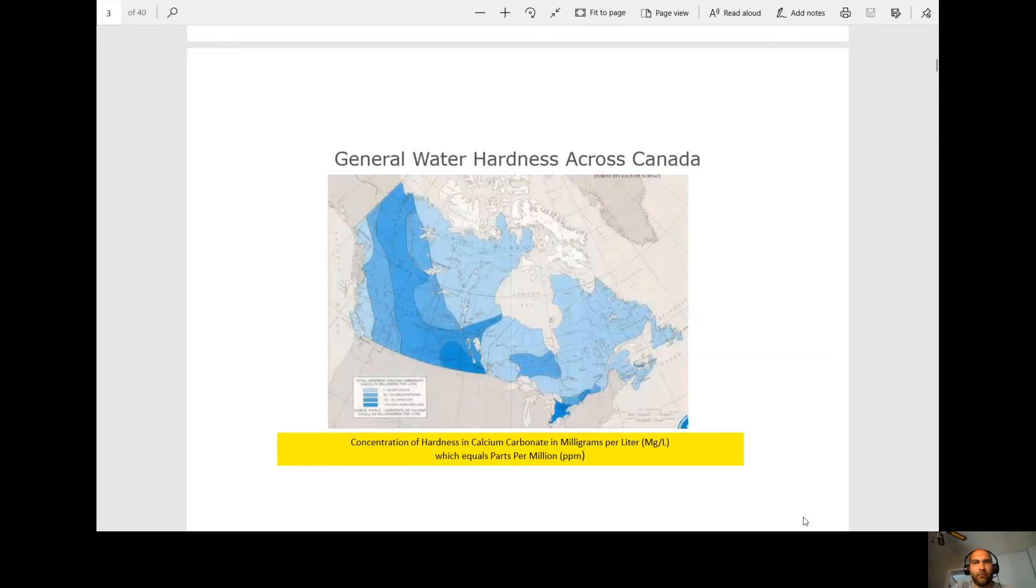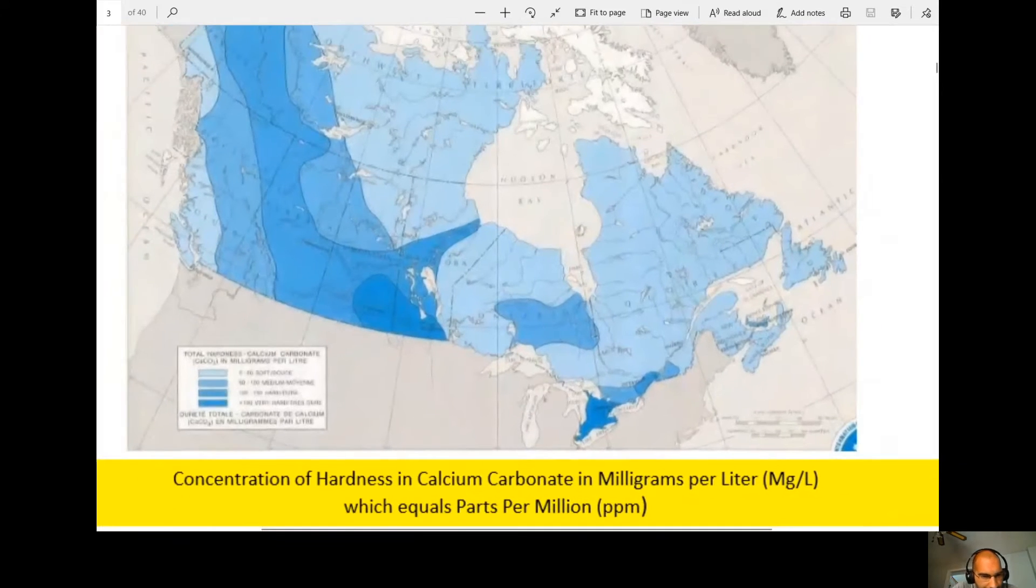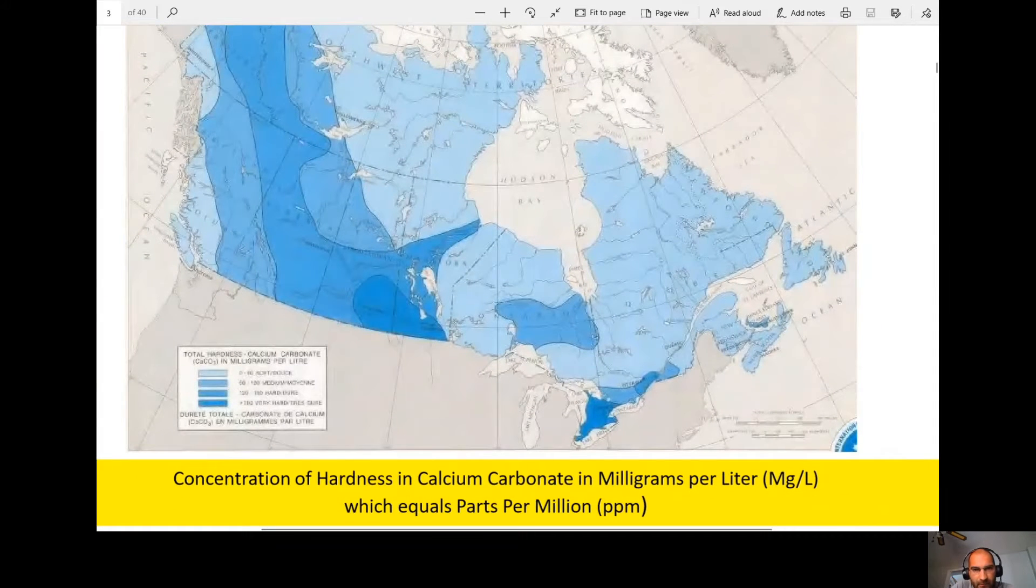Alright, so here's a map of water hardness across Canada. As you can see, different regions have harder water as we see in different sites. The more north we go, the harder the water is.